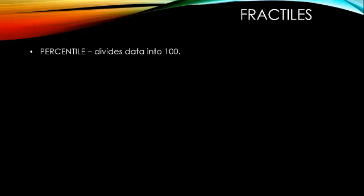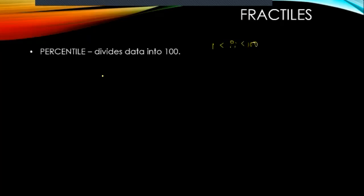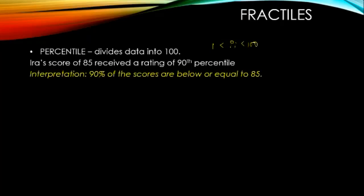Fractiles are another measure of location. There are three types. The first is the percentile, which divides data into 100. The value of the percentile ranges from 1 to 100 — there cannot be a 120th percentile or a negative percentile. For example, if Ira's score of 85 received a rating of the 90th percentile, it means 90% of the scores are below or equal to 85. So Ira belongs to the top 10%.